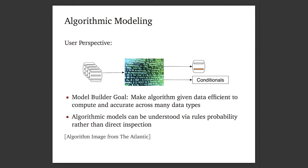Let's go a bit more into what algorithmic modeling means from the user perspective. The user has a bunch of data, there's an algorithm in between — a model and some associated inference — and out you get a way to simulate new data, conditional distributions like the posterior and posterior predictive distribution, and relationships between variables. In this setting, the model builder wants to make the algorithm efficient to compute given a particular inference algorithm. The rules of probability allow us to inspect what's inside by looking at relationships between variables.